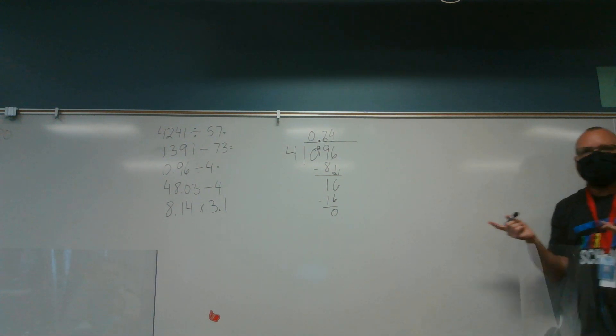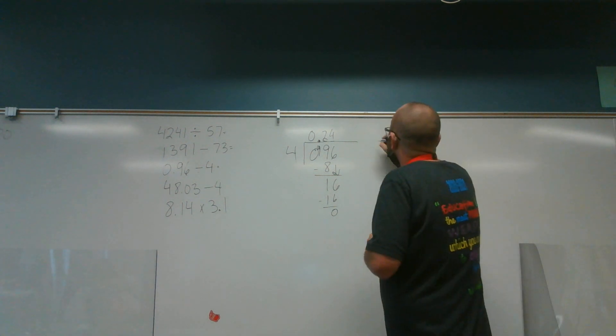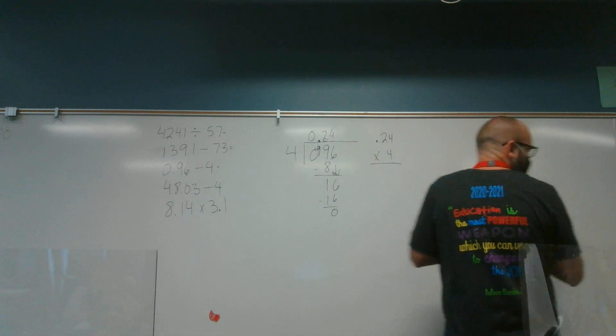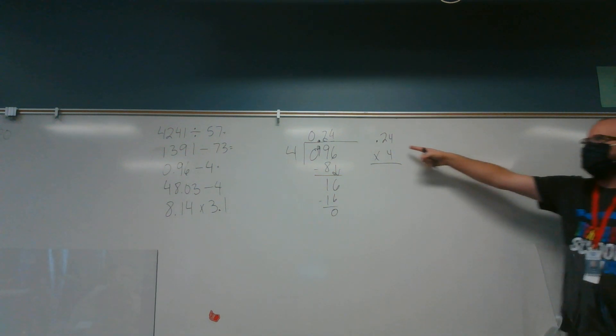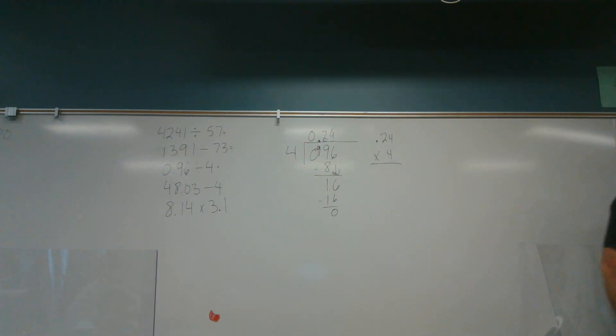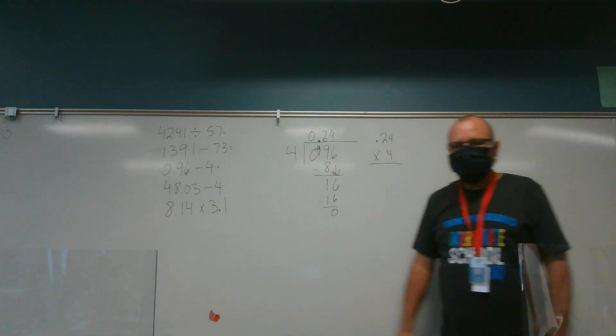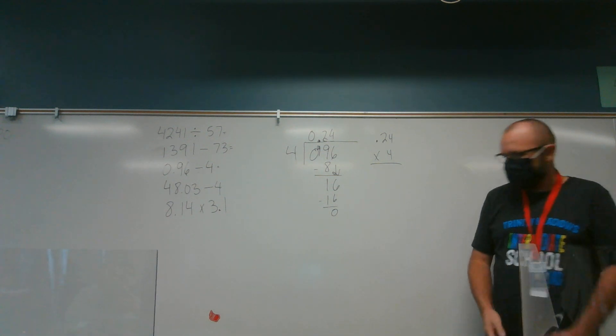Yes! If, again, I wanted to check it, I could multiply 0.24 times 4. How many numbers would be behind the decimal point in my product? 2. Because there's 2 behind it in the problem, so there has to be 2 behind it in the answer. Does that make sense?